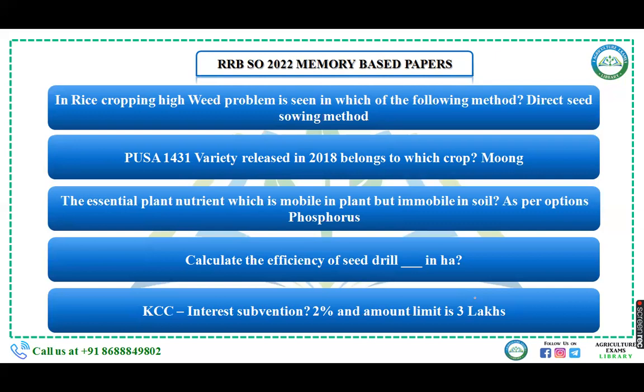The essential plant nutrient which is mobile in the plant but immobile in soil — as per the options, the right answer was phosphorus. There are some nutrients mobile in plant but immobile in soil, and some mobile in soil but immobile in plant. There were also two numerical-based questions to calculate the efficiency of a seed drill.